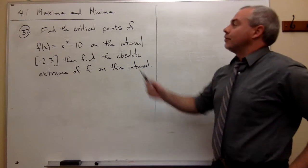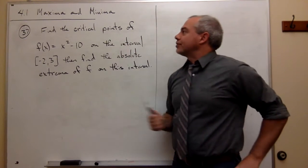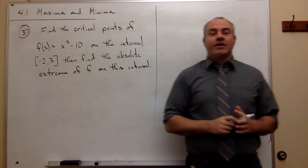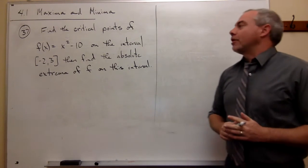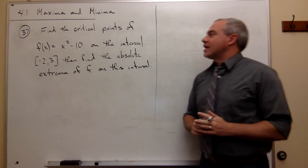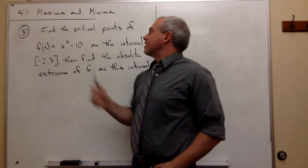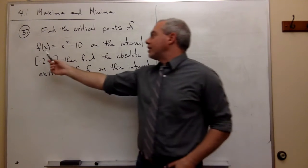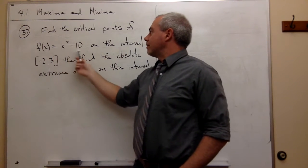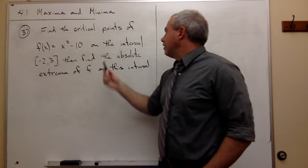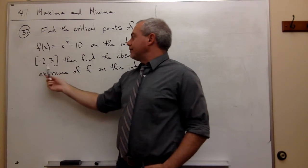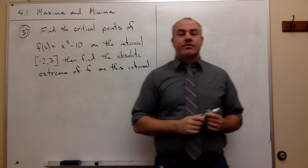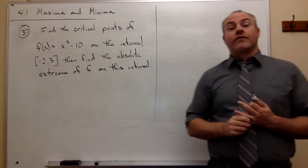Welcome back. Today we'll be looking at section 4.1, maxima and minima, and I'd like to start with problem number 37. Problem 37 says: find the critical points of the function f of x equals x squared minus 10 on the interval negative 2 to 3, and then find the absolute extrema of f on that interval.